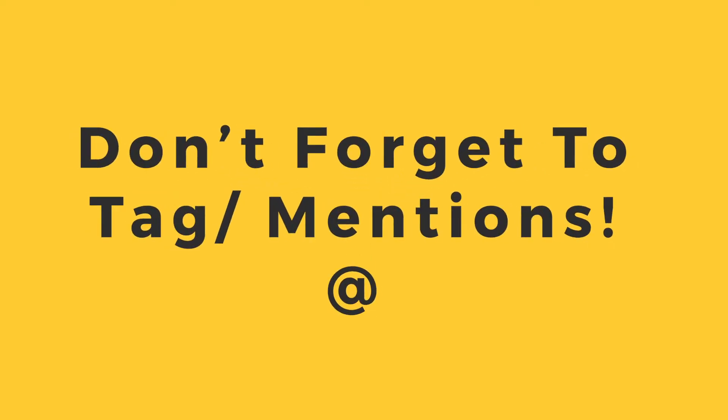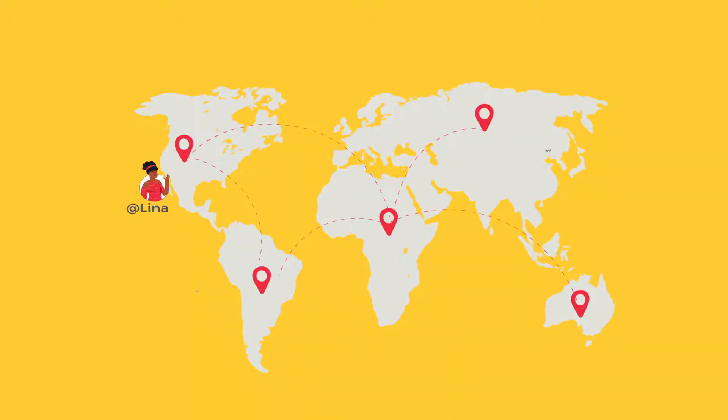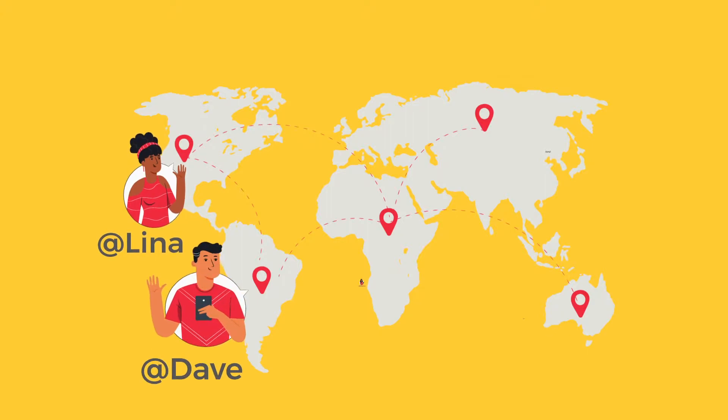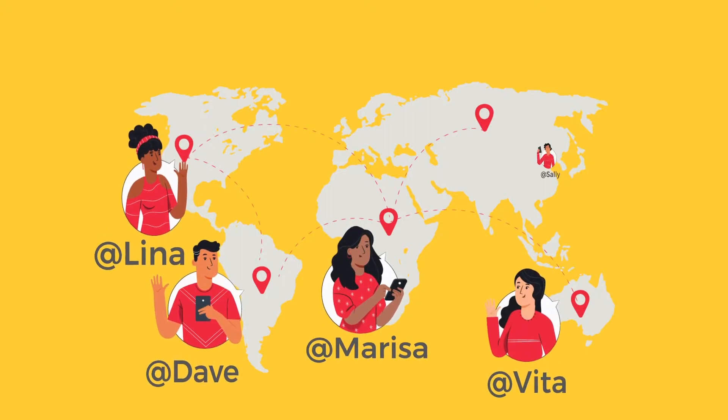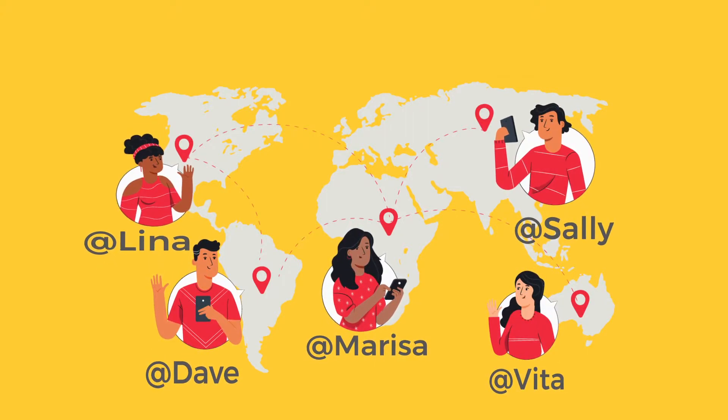The next tip is mentions. A lot of people have content that is relevant or related to others, but they forget to actually tag and mention them. When you mention or tag someone in your post, it increases the chance of your post being discovered by their networks and allows them to share the content itself.